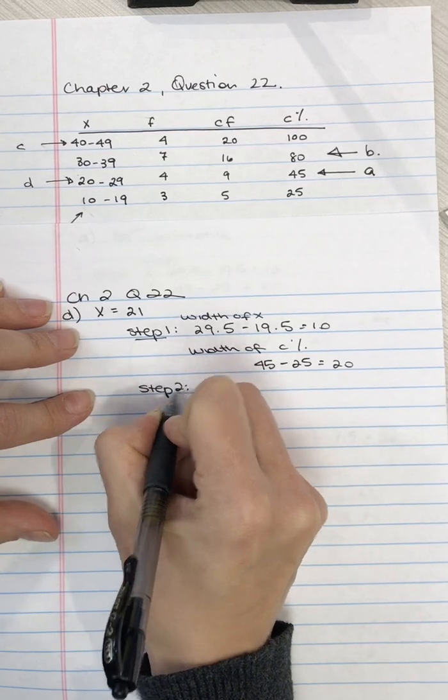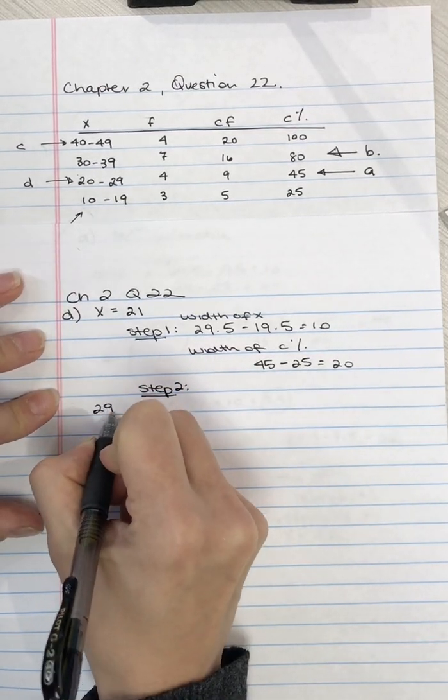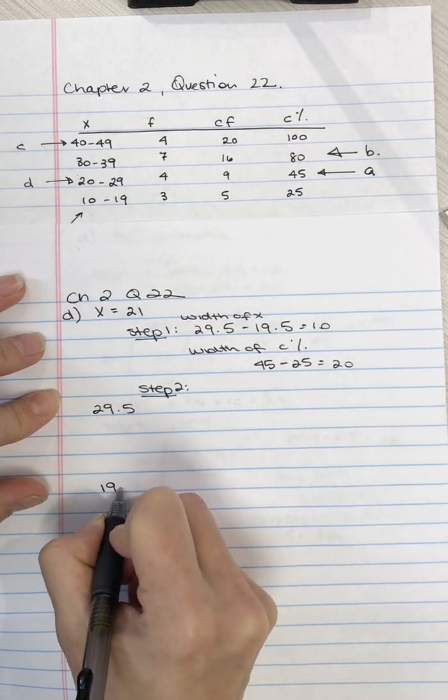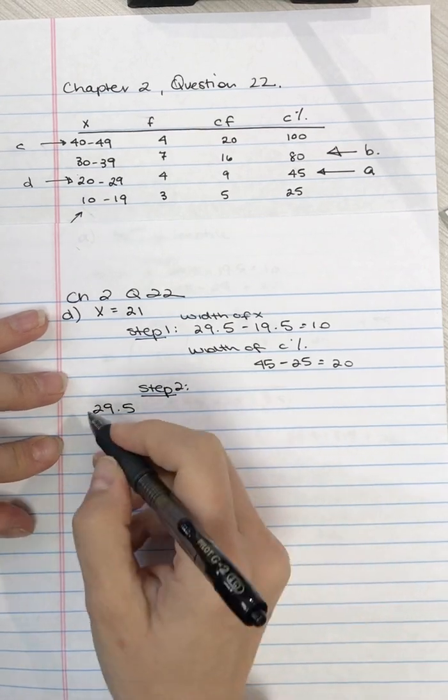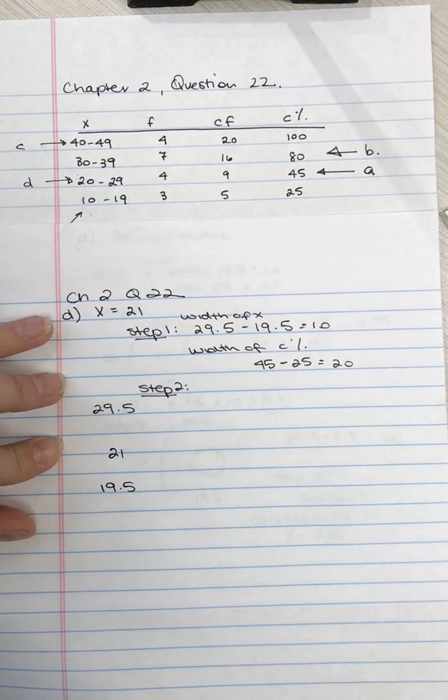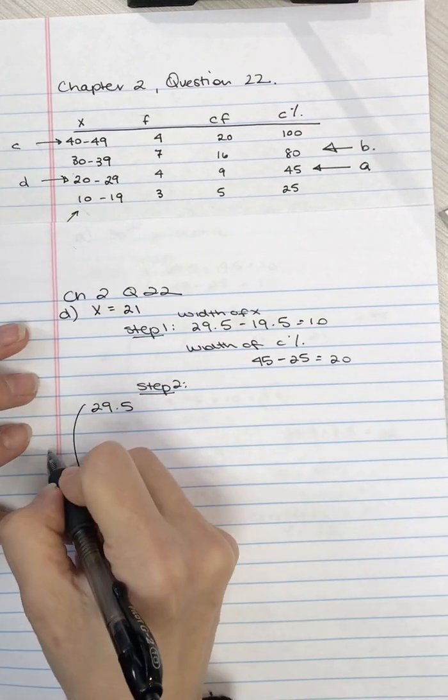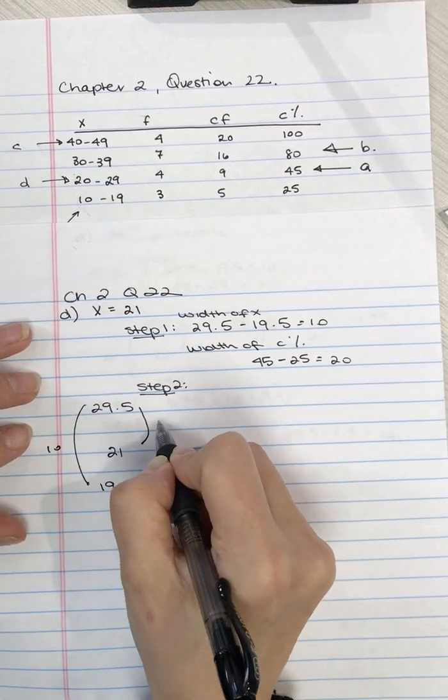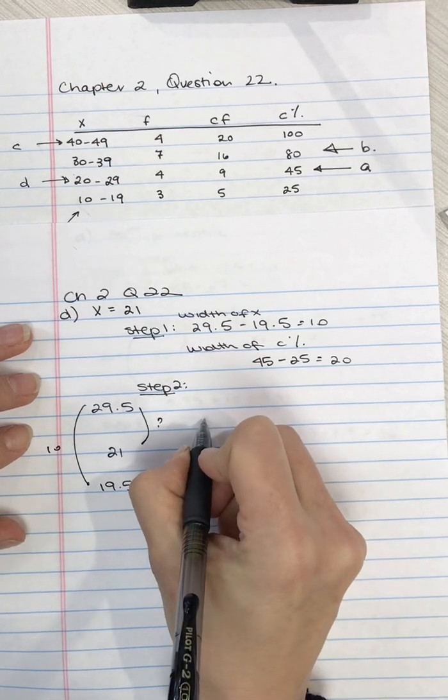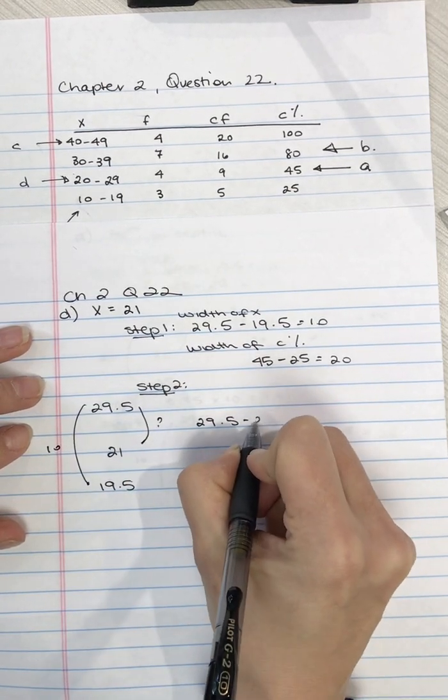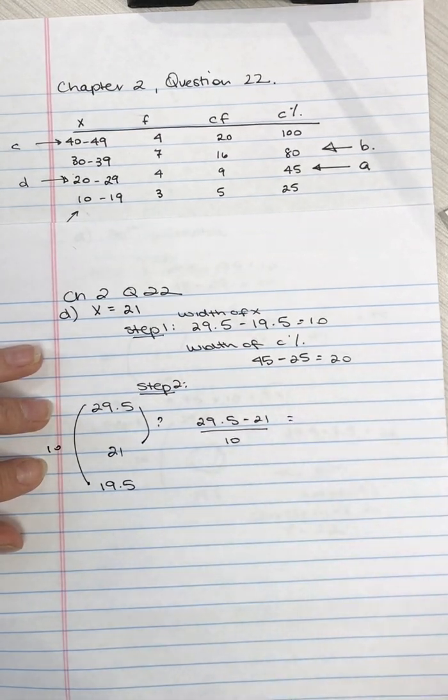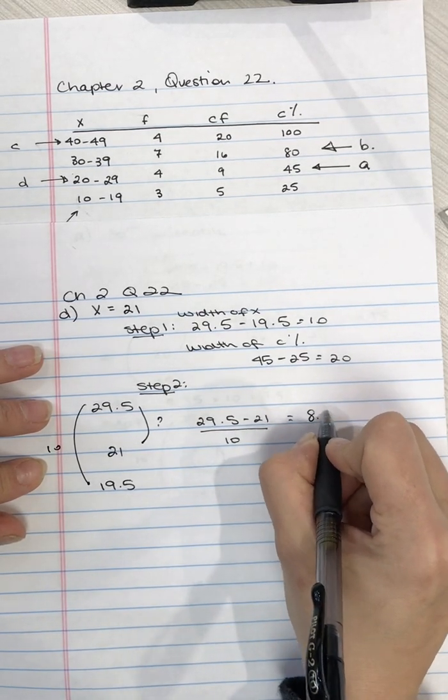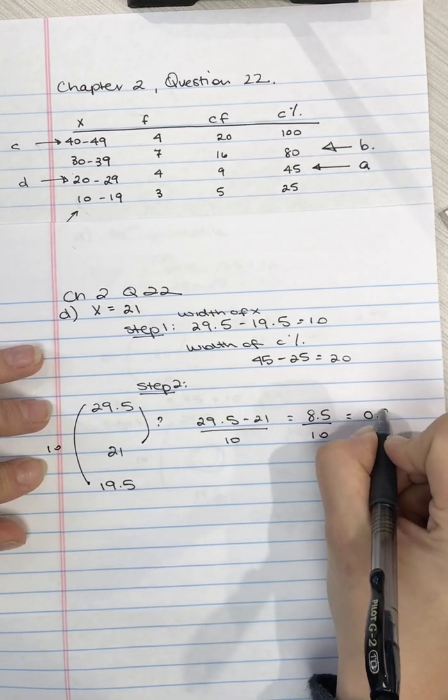Step 2, we have 29.5 is our upper real limit, 19.5 is our lower real limit, and we want to find what proportion, how far down, is 21. So this is 10. This is what proportion. So we're going to take 29.5, subtract 21, and divide it by 10. So 29.5 minus 21 is 8.5, divide it by 10, and that's 0.85.